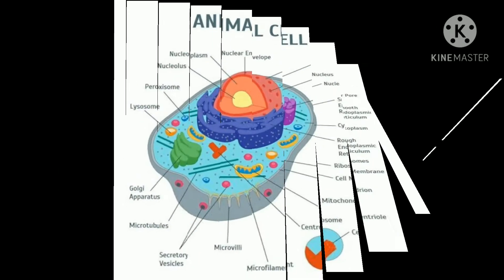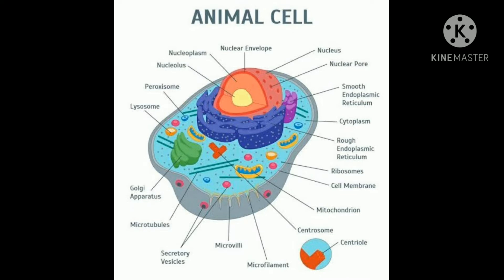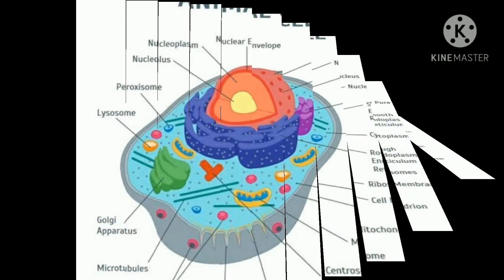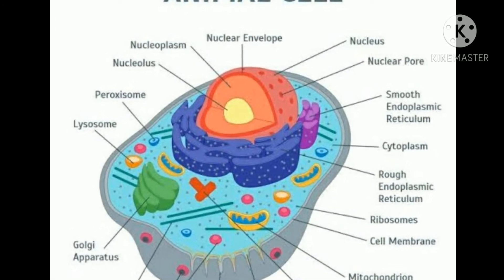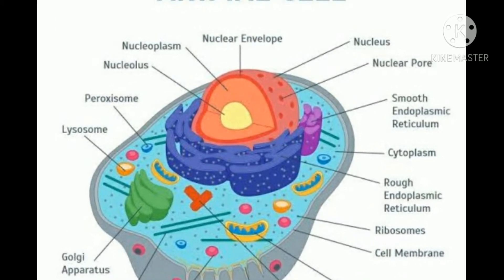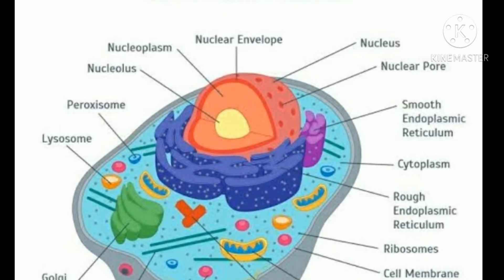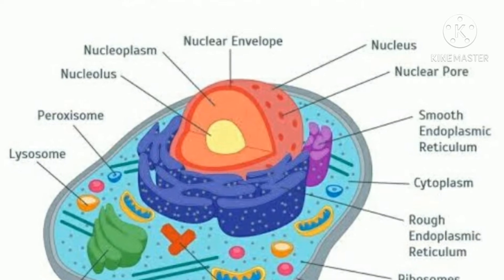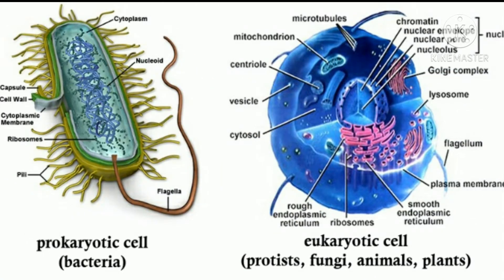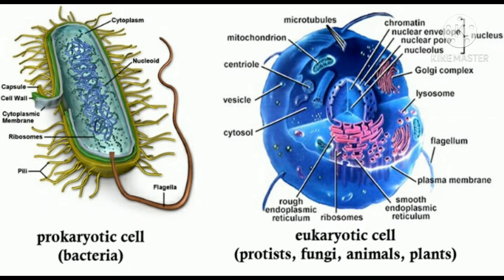Eukaryotic cells possess a nucleus — a region bounded by a complex membranous structure called the nuclear envelope. This difference in nuclear structure is the basis for the terms: prokaryotic, where 'pro' means before and 'karyon' means nucleus; and eukaryotic, where 'eu' means true and 'karyon' means nucleus.